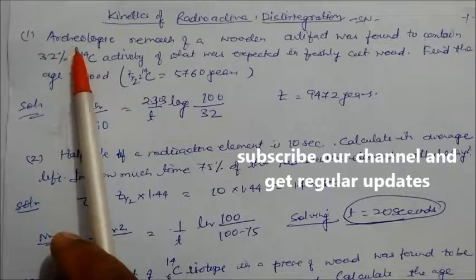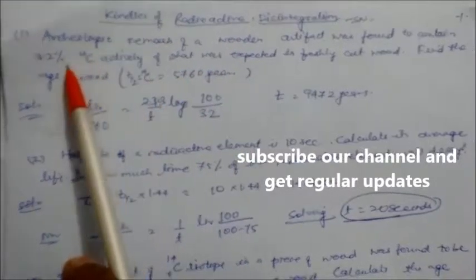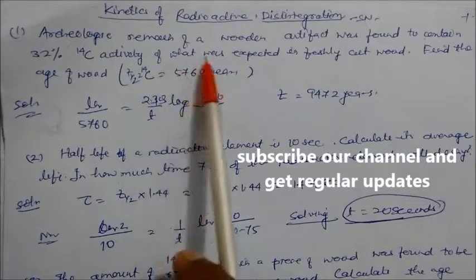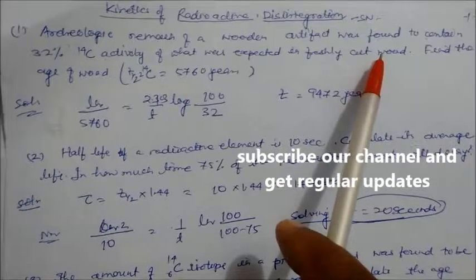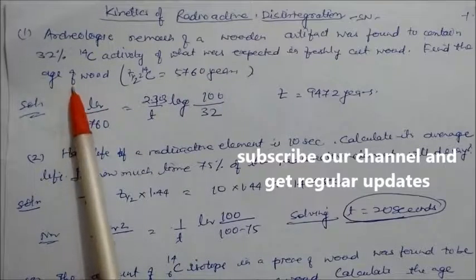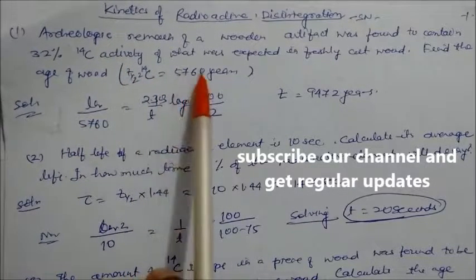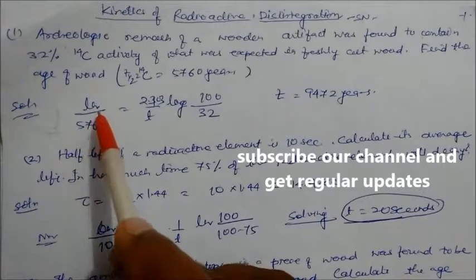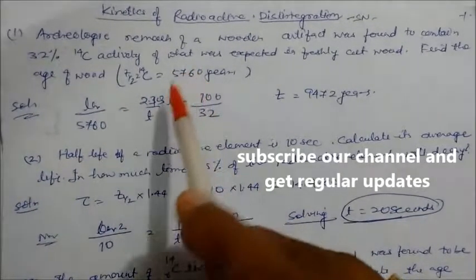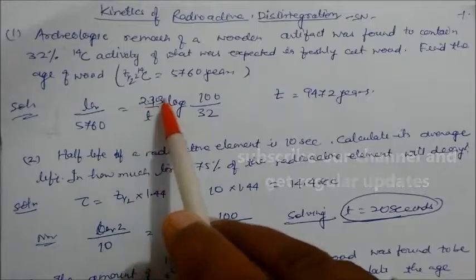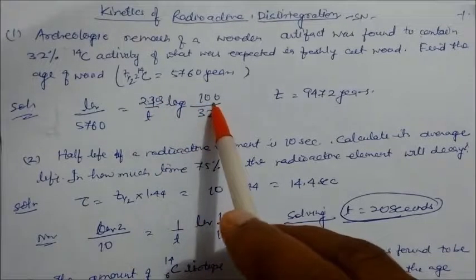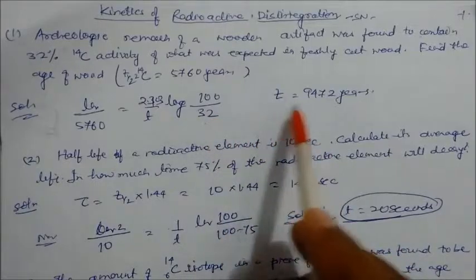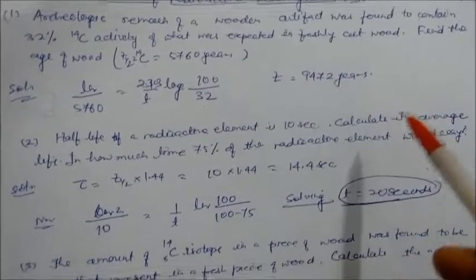Problem 1: Archaeological remains of a wooden artifact were found to contain 32% of the current C-14 activity expected in freshly cut wood. Find the age of the wood. The half-life of C-14 is 5760 years. Using first order kinetics, with initial amount 100 and final 32%, on solving you get the time in years.